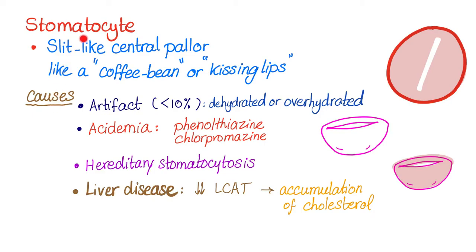Causes of stomatocytes can be an artifact, like an error during preparation. This will be less than 10% of the cells on your blood film being stomatocytes, with the rest — 90% — being just normal red blood cells. If they are more than 10%, it's a disease, not an artifact. Artifacts such as: the cell being dehydrated or even over-hydrated can give you this slit shape. Also acidemia, or if you are taking drugs such as phenylthiazine or chlorpromazine, or hereditary stomatocytosis — yes, indeed, it exists.